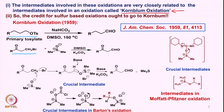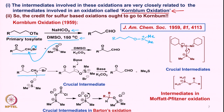In these cases, the reaction requires the use of DMSO in the presence of a base like sodium bicarbonate at high temperature — around 150 degrees. What happens is that DMSO acts like a nucleophile, reacts in an SN2 fashion, and leads to an intermediate of this type. In a similar fashion with a tosylate, you get a similar intermediate with the OTs leaving group departing and the DMSO oxygen attacking.